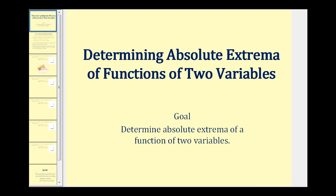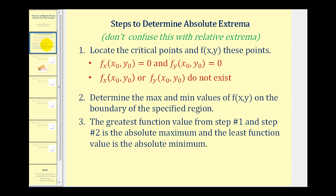Welcome to a video on determining the absolute extrema of a function of two variables. Here are the steps we'll take. Number one, we'll locate the critical points and the function values at these points. Remember, the critical points occur where the first order partials are both equal to zero, or where they do not exist.